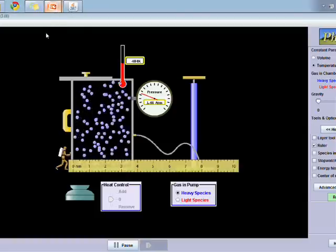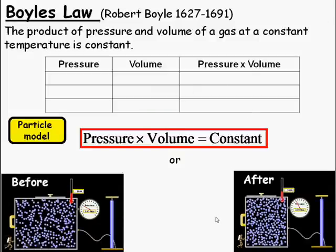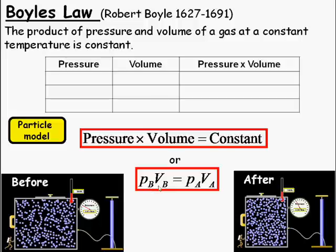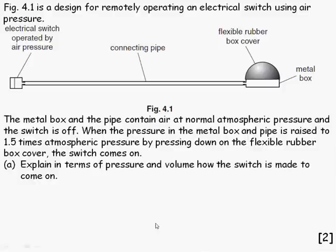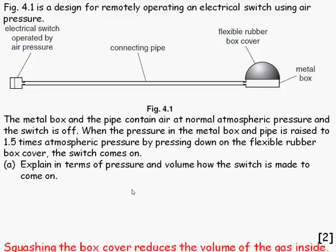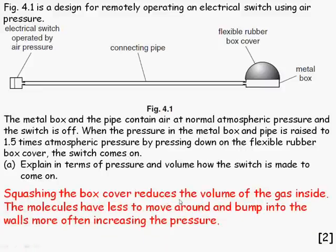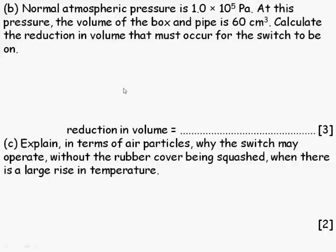So we've just seen that pressure times volume is equal to a constant, or we can write it as a before and after equation: pressure times volume before (PB VB) is equal to the same thing after. Let's look at a simple example question. Pause the video and read this question very carefully and attempt it yourself. If we squash the box, it's going to reduce the volume, and the molecules are going to have less room to move around, bumping into the walls more often, increasing the pressure. Part 2—you need to make sure you've read this carefully before you move on. Pause the video and read the question.